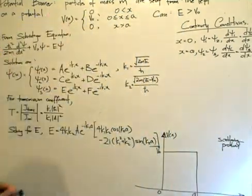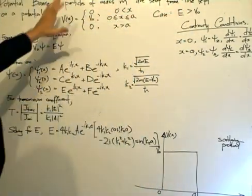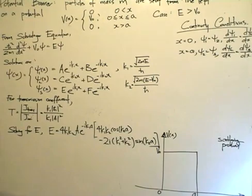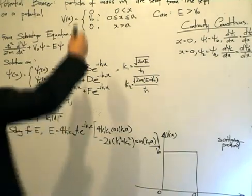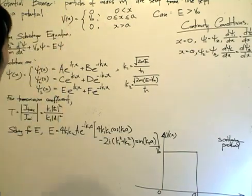All right, so the potential barrier is the particle of mass M that is sent from the left on a potential which is defined as this. V in terms of x is equal to 0 for x less than 0, V0 for x between 0 and A, and 0 for x greater than A.